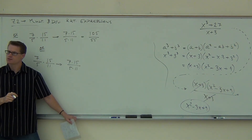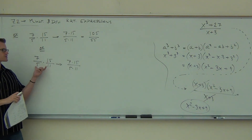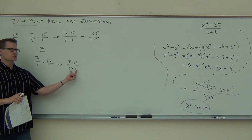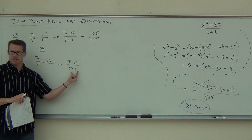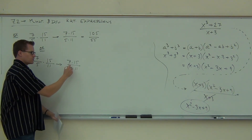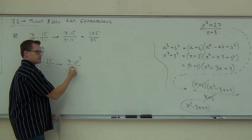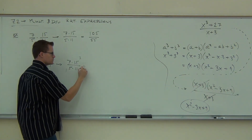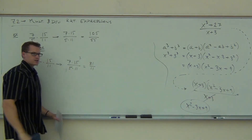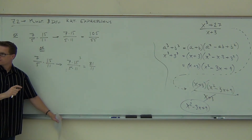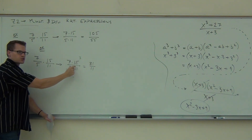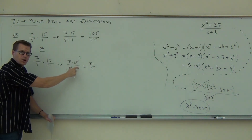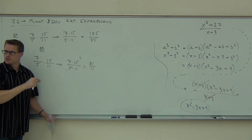Look at the problem. Do you see that in going from this step to this step, we've actually changed it from a multiplication problem to a simplification problem? We can simplify common factors — the 5 becomes a 1, the 15 becomes a 3. And you get 21 over 11, which is a lot easier. Writing two fractions being multiplied as one fraction changes it from multiplication to simplification — and then we're back to the 7.1 stuff we just finished doing.